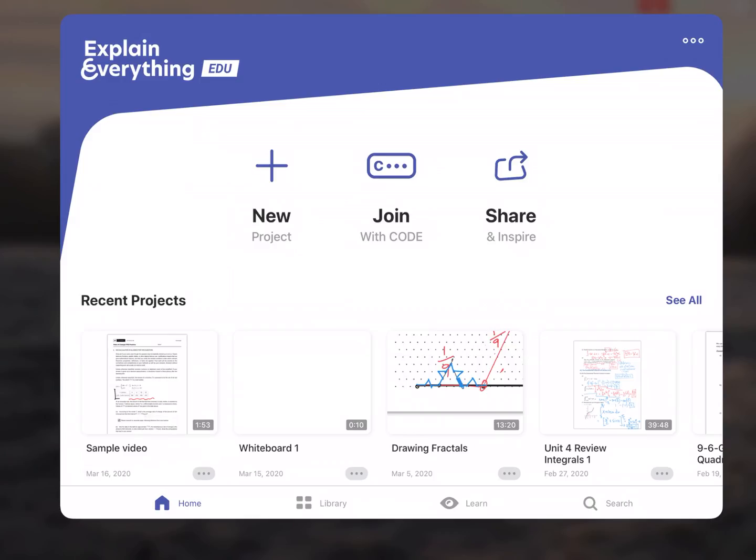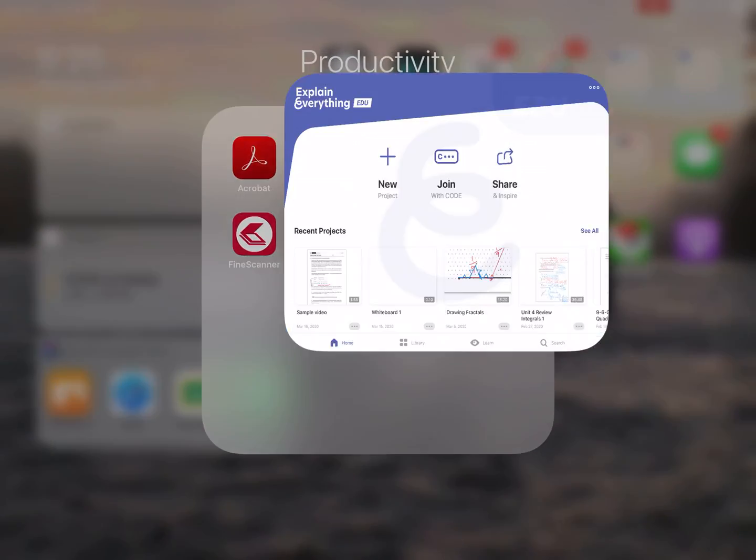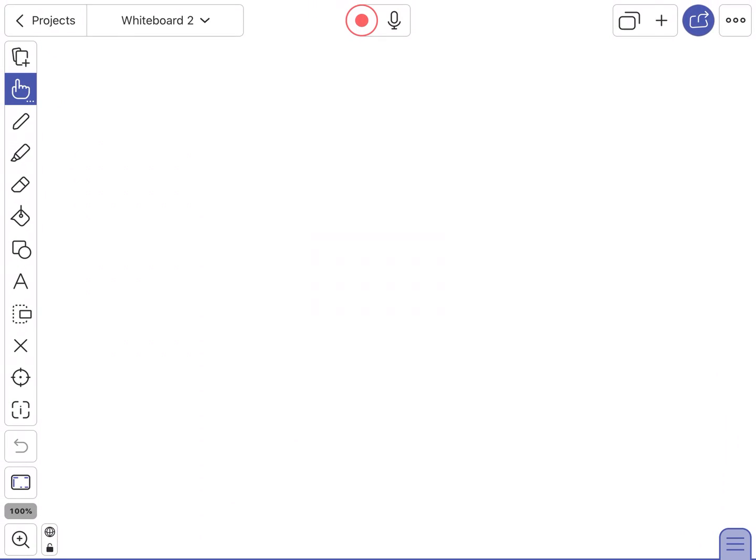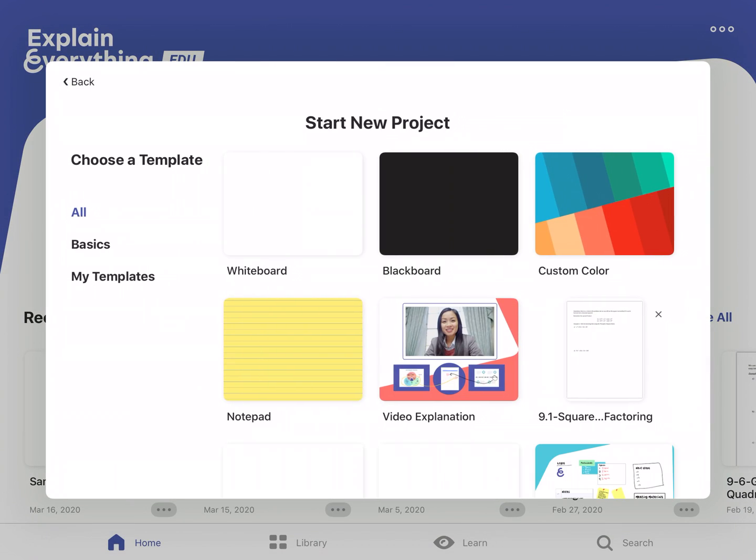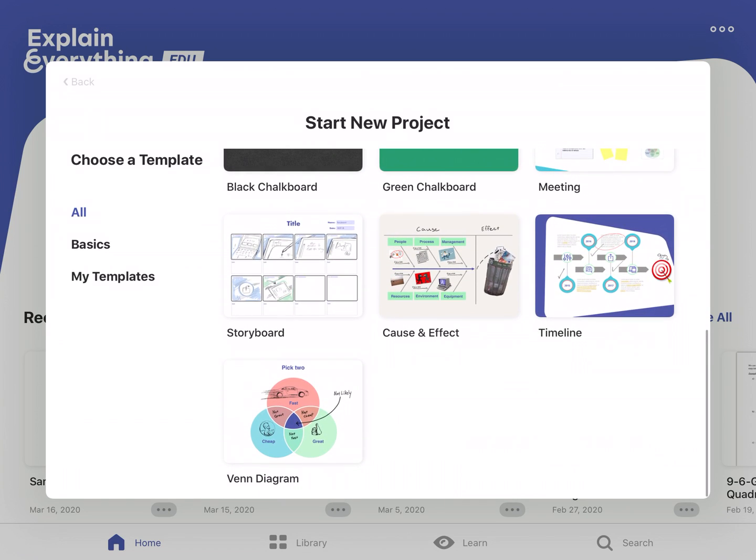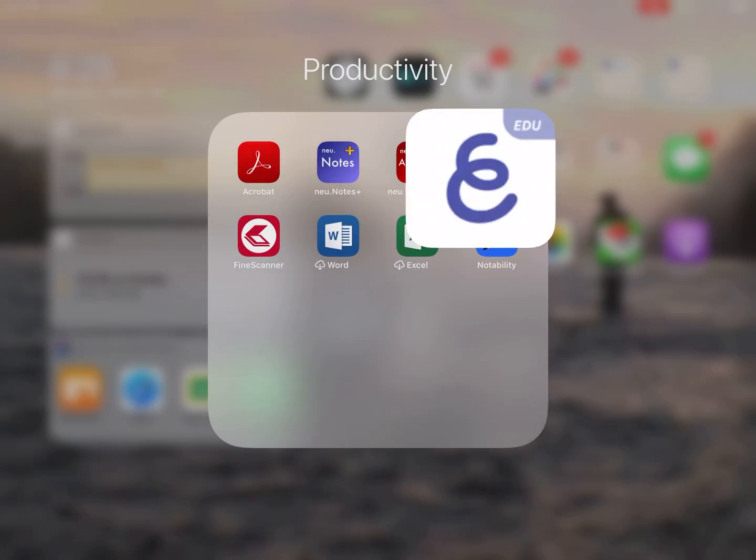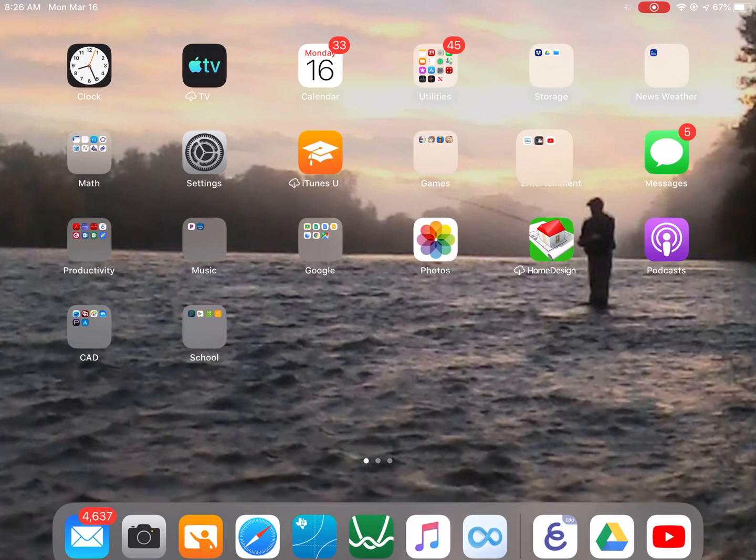So what we need to do first is get a PDF. You can start in Explain Everything with a blank page or they have some templates. I've never quite used the templates but this might be kind of fun. Usually what I do to start this off is I'll go find a PDF somewhere.